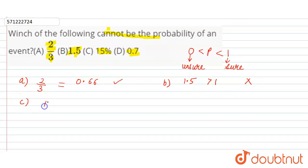Now in the C part, 15%. 15% means 15 divided by 100, and 15 divided by 100 is 0.15, which is definitely lying between 0 and 1. So this can be the probability of an event.